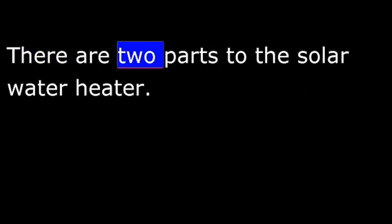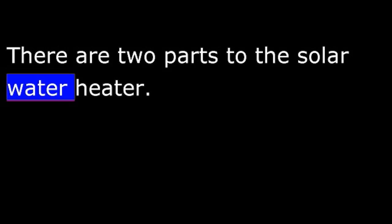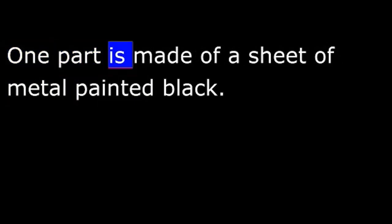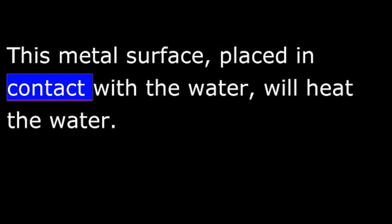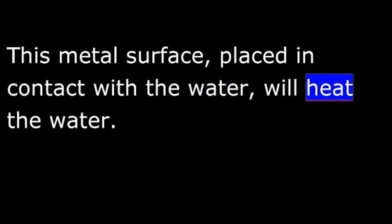There are two parts to the solar water heater. One part is made of a sheet of metal painted black. This metal surface, placed in contact with the water, will heat the water.